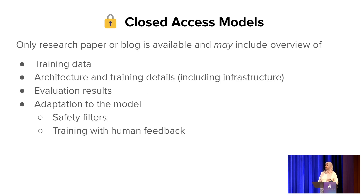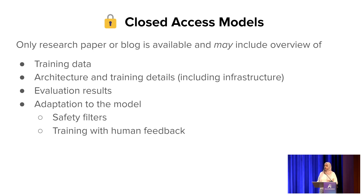Open access also enables researchers to start interpreting why a model generated a certain output. On the other hand, closed access models only come with a research blog or paper that may or may not include details about the training data, architecture, training details including what infrastructure was used, evaluation results, and any adaptation such as RLHF or safety filters.